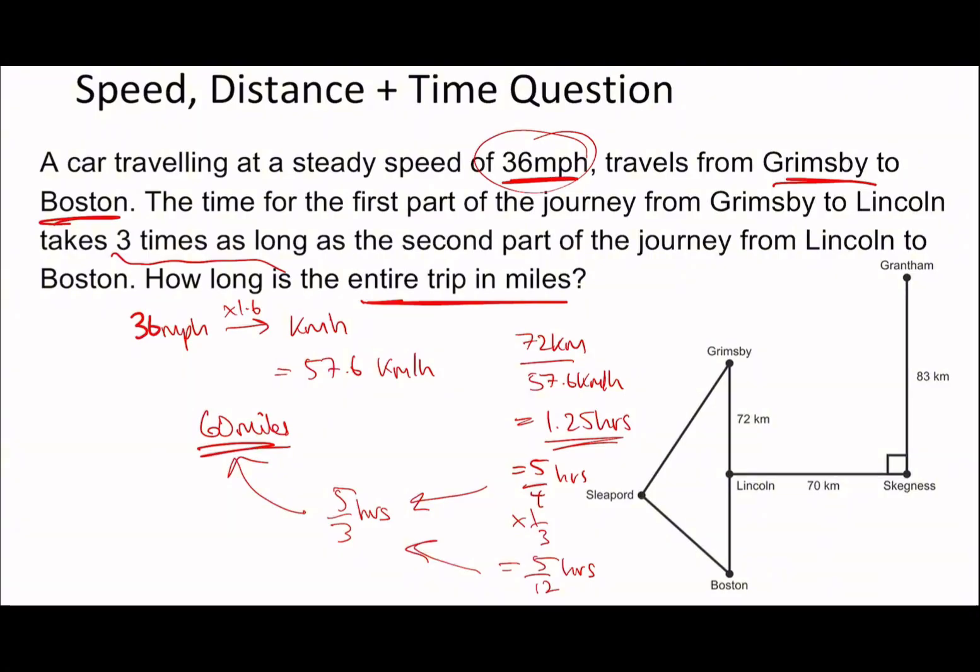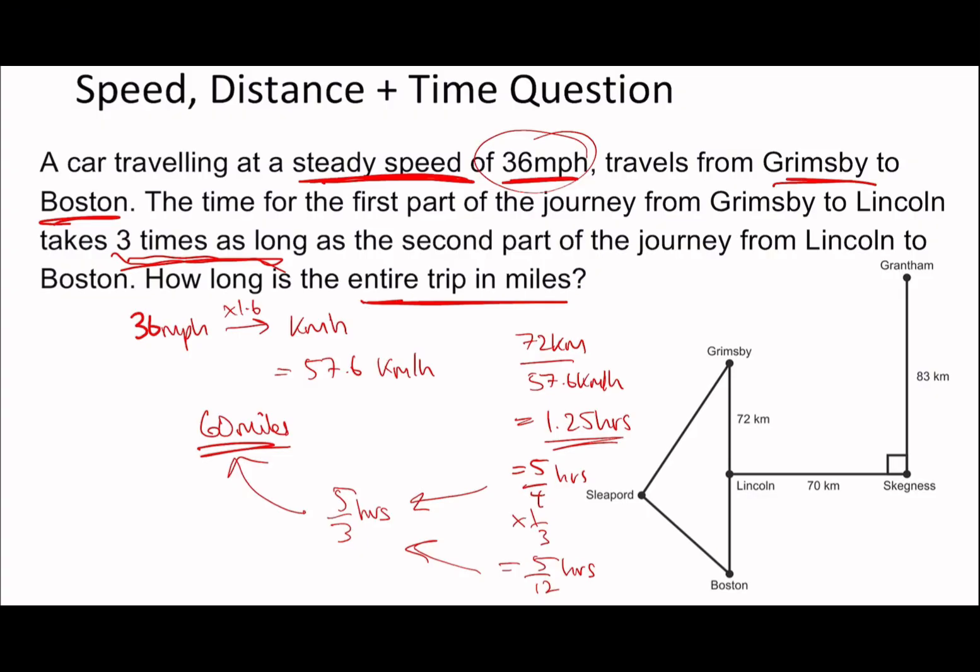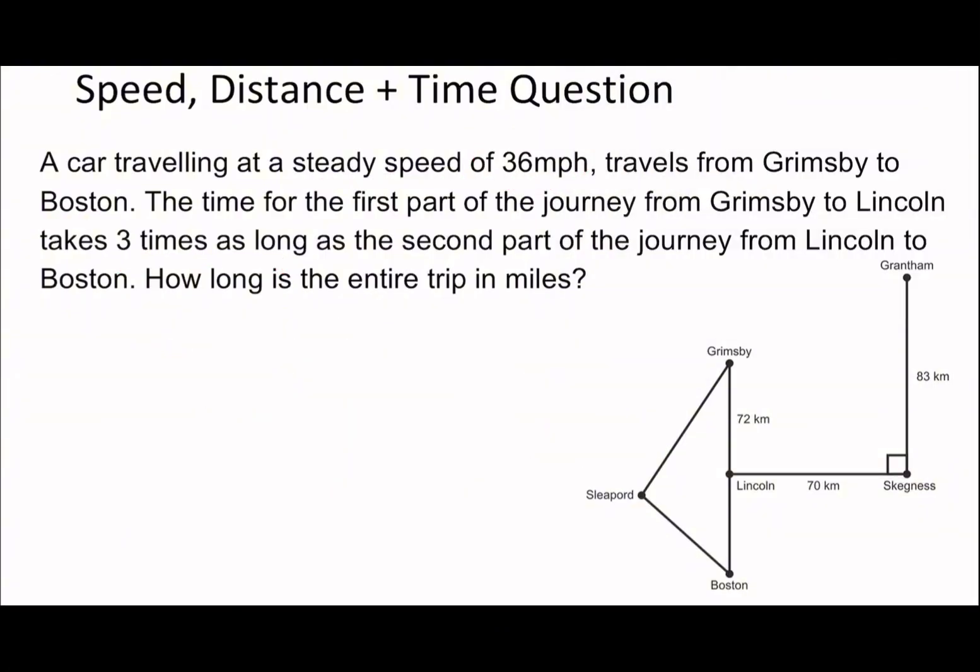Many of you may have realized a shortcut. It relies on steady speed of 36 mph. If we're going at steady speed and the time for the first part is three times as long as the second part, that must be because the second part is three times as short. It must be because the first part is three times as long in terms of distance as well.